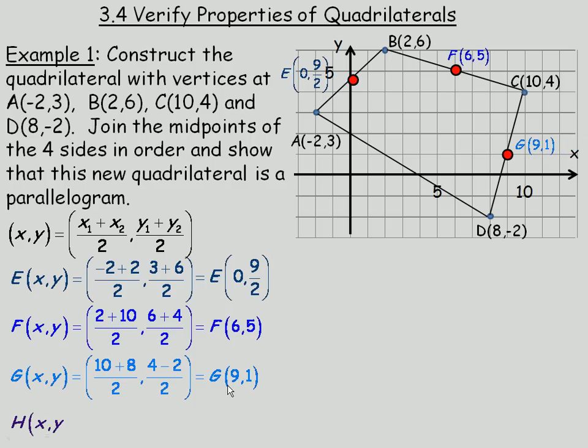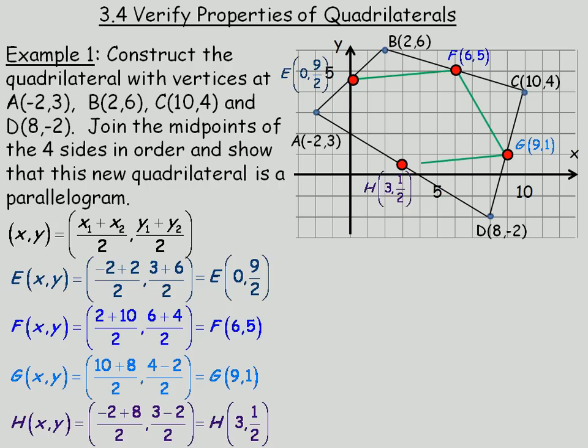So there is G at (9,1). Finally, H is the midpoint of the 4th side. So we would add -8 and 3 to get H at the point (3, 1/2). So joining the 4 midpoints in order, here is the quadrilateral we get.